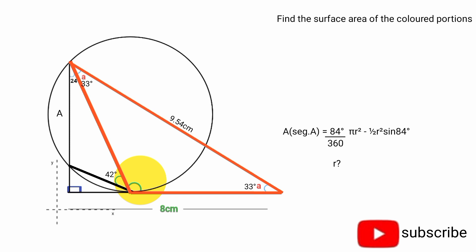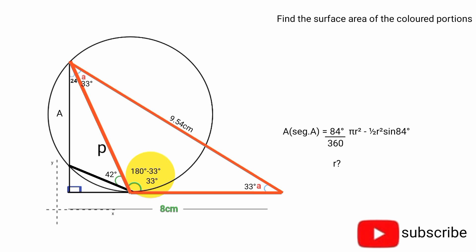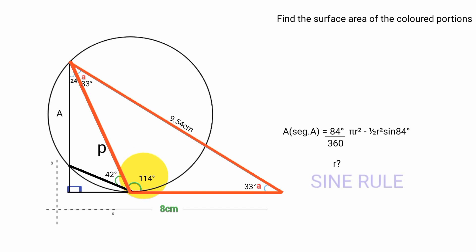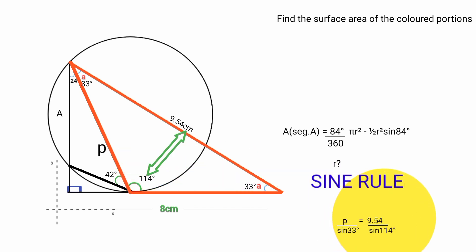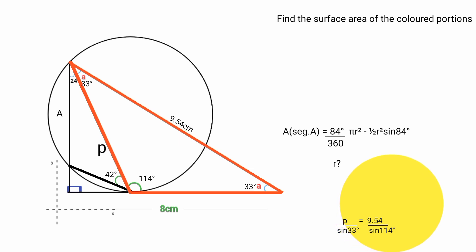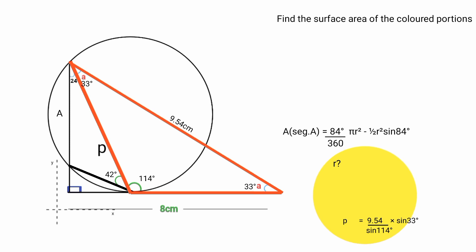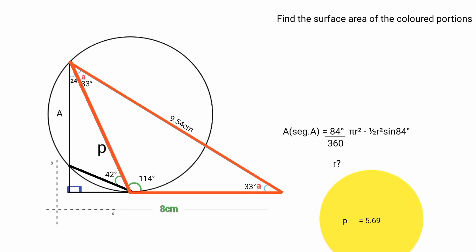From this triangle, we use the sine rule to find this side. Label it P. Since this is 33 degrees and this is 33 degrees, the third angle must be 180 minus 33 minus 33, which is 114 degrees. Using the sine rule: P over sin 33 degrees equals 9.54 over sin 114 degrees. Making P the subject: P equals 9.54 over sin 114 times sin 33 degrees, which equals approximately 5.69 centimeters.